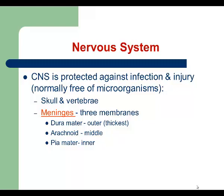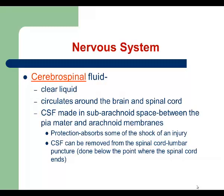Cerebrospinal fluid is actually made in the subarachnoid space. It is a clear liquid that circulates around the brain and spinal cord, and its main function is protection from injury. We also use cerebrospinal fluid to diagnose certain infections, for example meningitis. To do so, we perform a procedure called a spinal tap, which we usually perform at the level of L5.